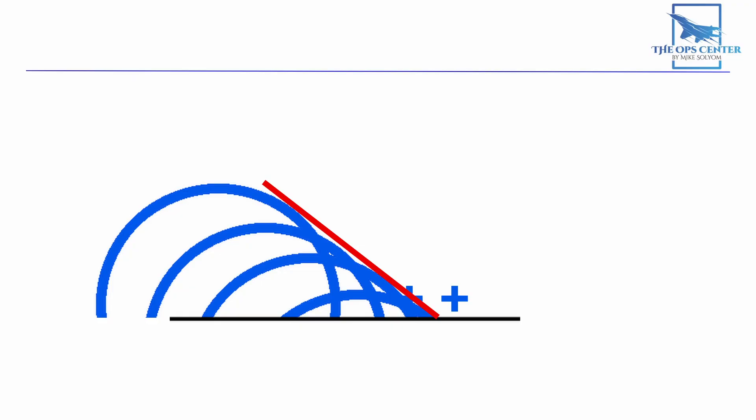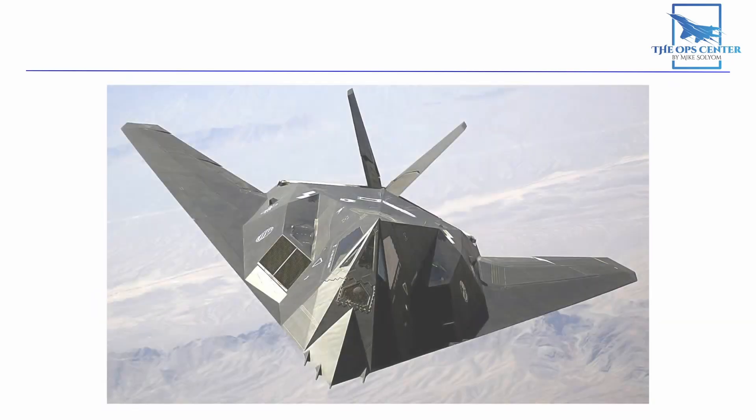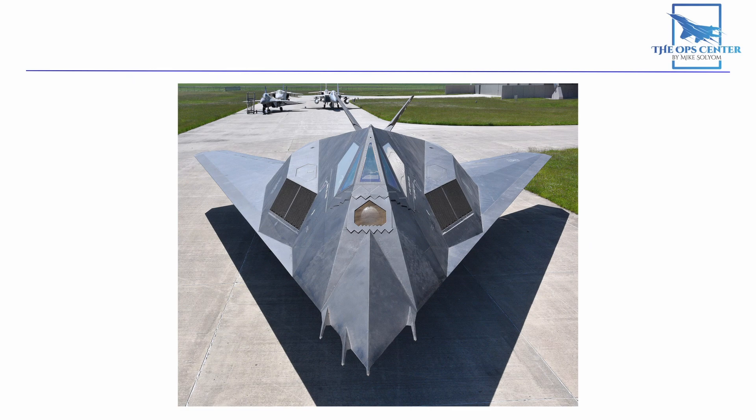As a designer of stealth aircraft, you would then know that if you can't control radar returns with absorbent material, then you would control it by directing the specular reflection away from the enemy radar emitter. This is very evident in the design of the world's first operational stealth interdictor, the F-117. Looking at it from the front, you can see that every surface is designed in a way to redirect the specular reflection away from an emitter in front of the aircraft. When the F-117 is flying towards a radar, that radar will only get diffuse reflections, which are very weak.